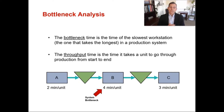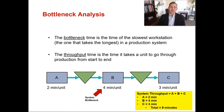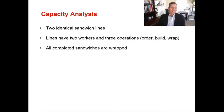Throughput time is the time it takes for a unit to go through production from start to end. For this three-step example — process A at 2 minutes, process B at 4 minutes, process C at 3 minutes — the total throughput time is 9 minutes.